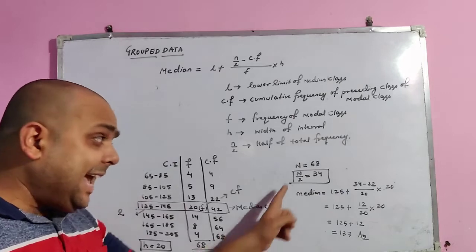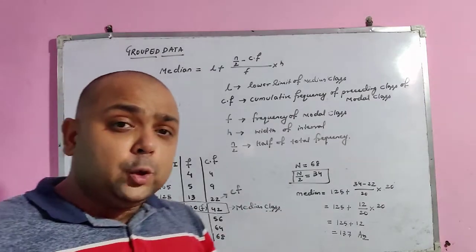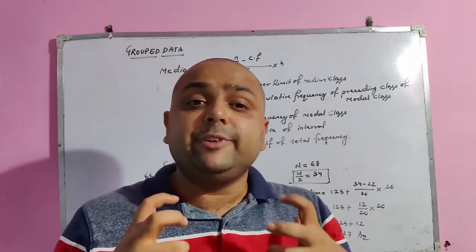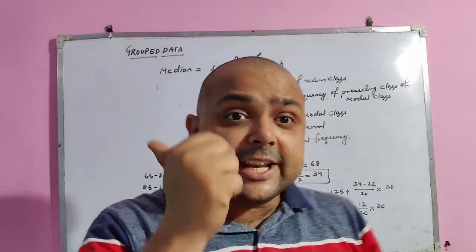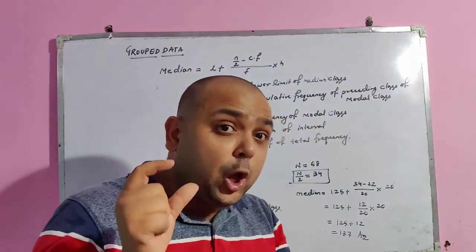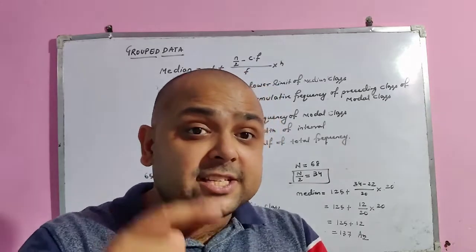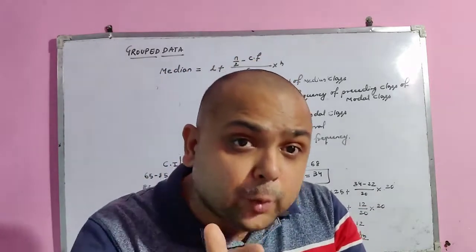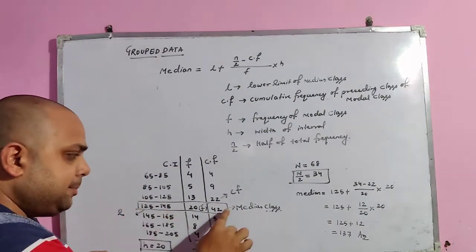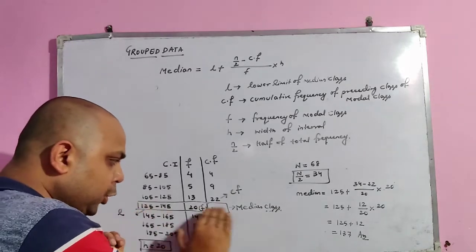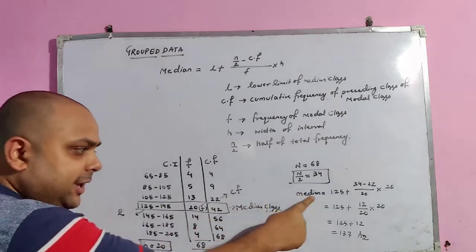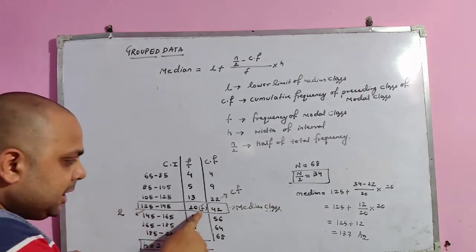Now, n/2 = 34. We must find the cf value that is greater than n/2 and nearest to it. That value is 42, so that row is the median class — mark it with a box.